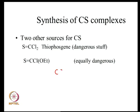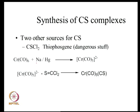Instead of CS₂, one can substitute with thiophosgene, or ethoxythiochloroformate is another option — also dangerous but easier to handle than thiophosgene. We will look at molecules that can be generated using these two alternatives to carbon disulphide, which must both be handled very carefully.